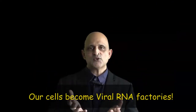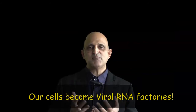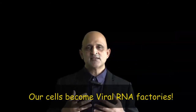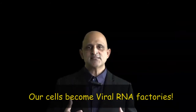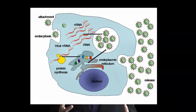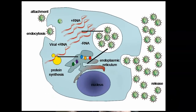Once the coronavirus has replicated within our cells, it releases itself by a process known as exocytosis. The virus then enters our lungs, and when we breathe and cough, this virus is transmitted into the public domain.